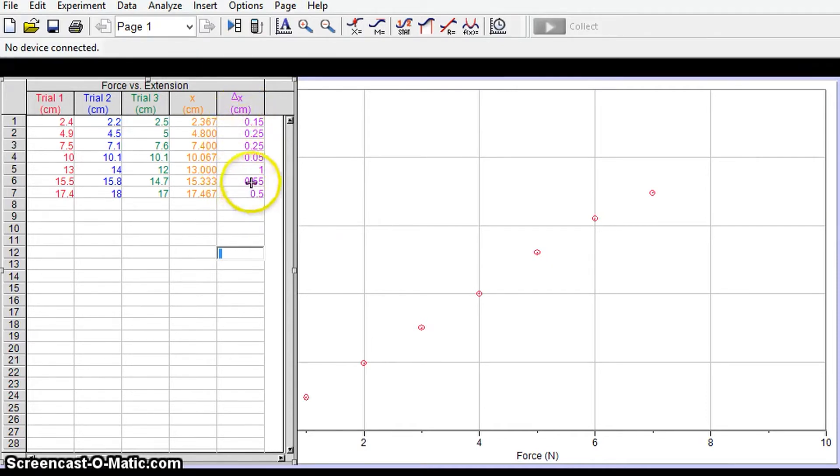So it might not be appropriate to have a single sized error bar for all of these data points, so it's very easy as I said to actually tell Logger Pro to have a customized error bar for each data point.